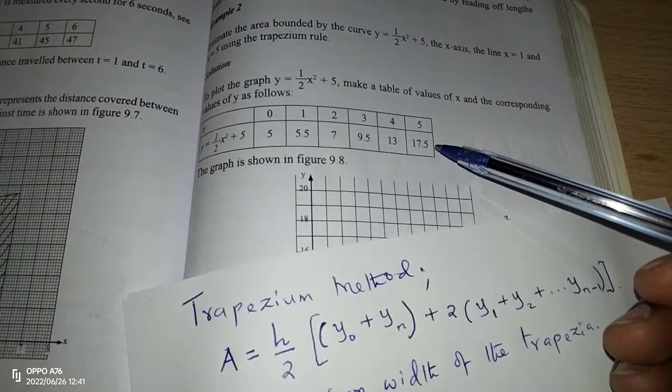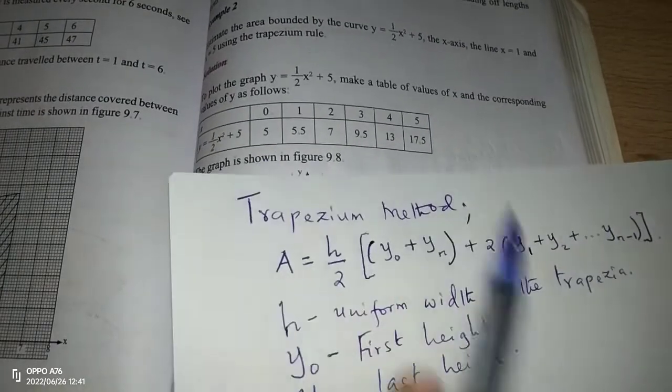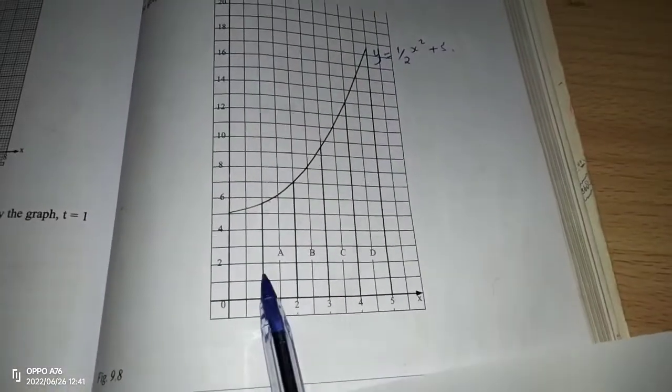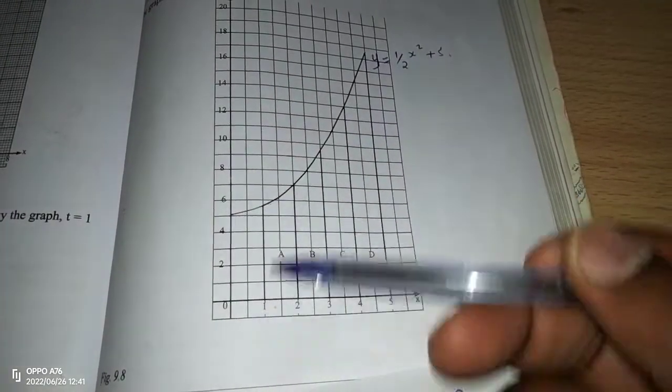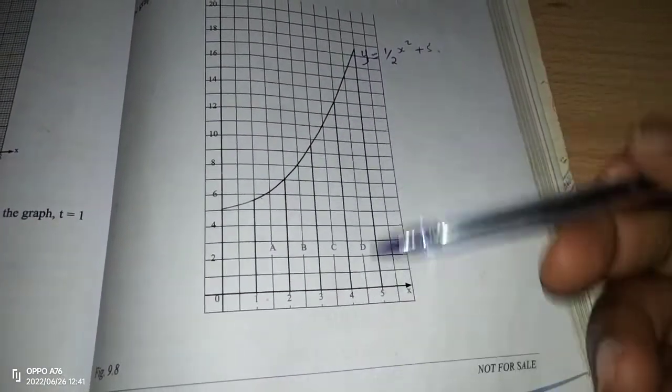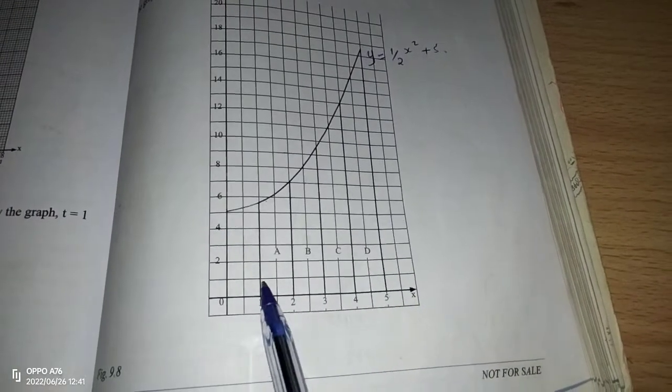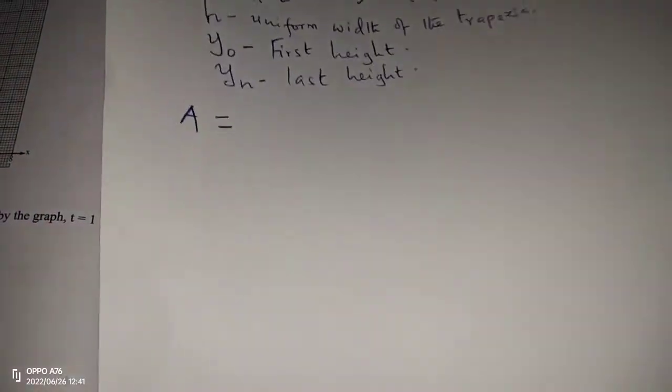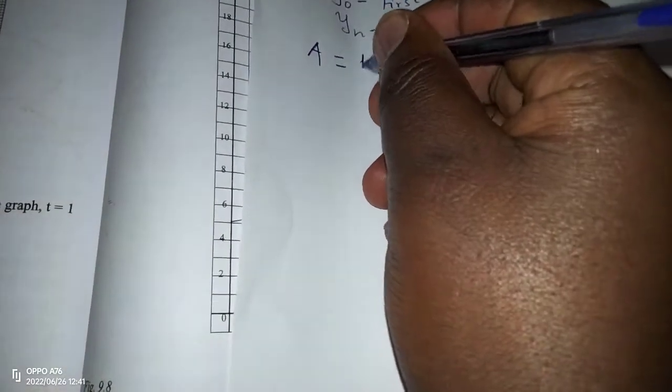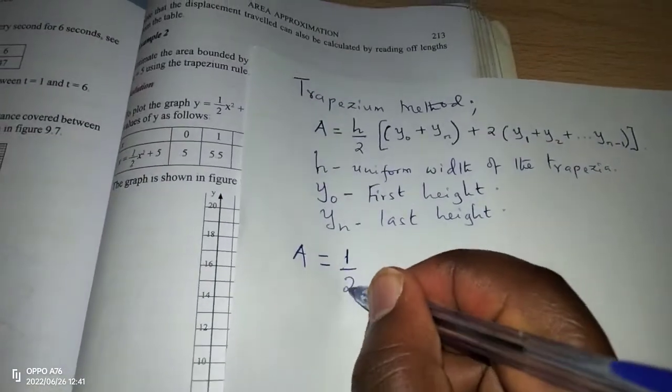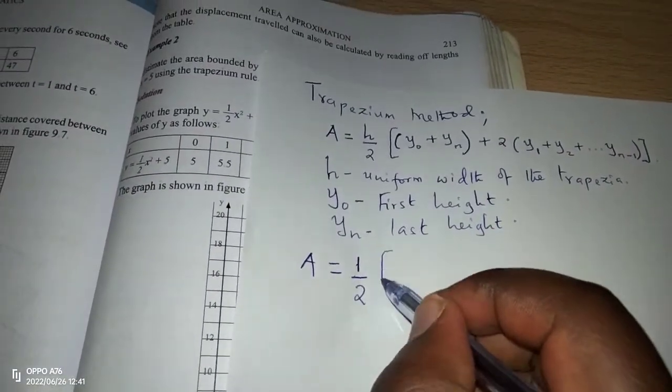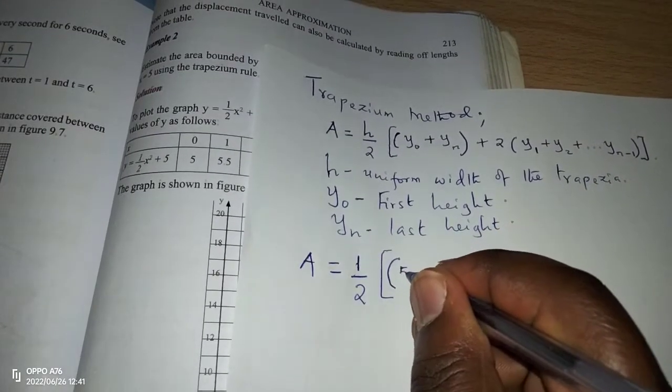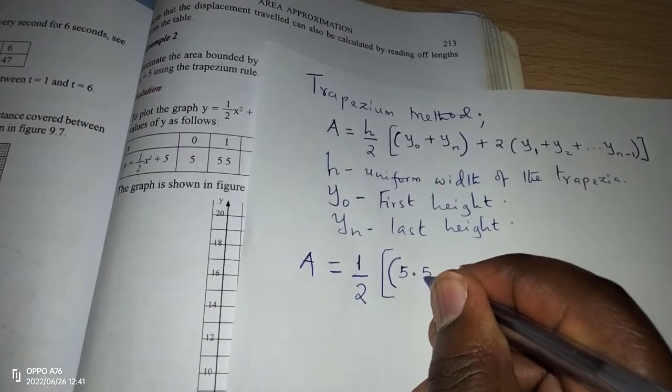So in this case, we can now apply the formula by saying h, which is the uniform length of the trapezia. From one trapezium to the other, in case we have divided this region into several trapezia, we can see from one to the next we just have one unit interval. So that uniform interval of 1 is our h. Then we divide it by 2.